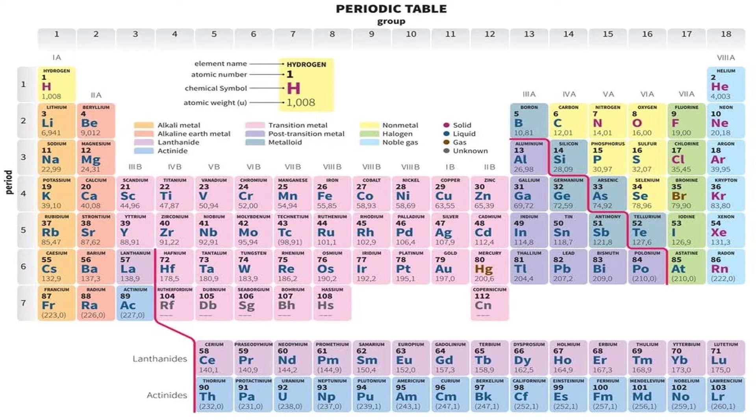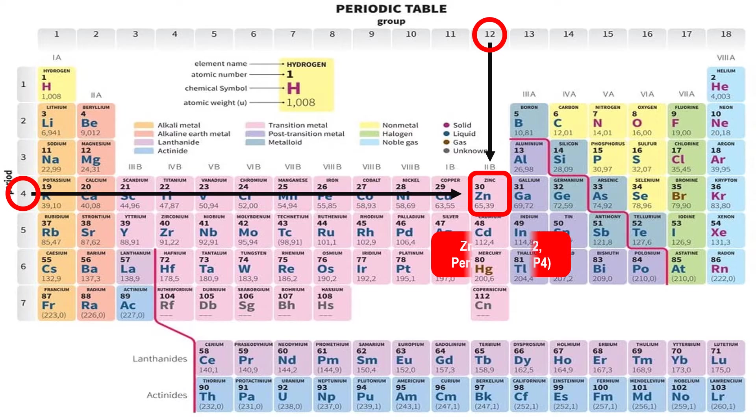Let's try to identify the group and period number of a specific element. For example, we have zinc. Zinc is located in group 12, period 4, or G12, period 4.